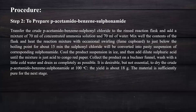Step 2: Transfer the crude product to a reaction flask. Add 70 mL concentrated ammonia solution and 70 mL water, mix, and heat the reaction mixture with occasional swirling in the fume cupboard, just below the boiling point for 50 minutes, until the sulfonyl chloride converts to a paste suspension of the corresponding sulfonamide. Cool the suspension in ice, then add dilute sulfuric acid until the acid color appears on Congo red indicator. Collect the product on a Buchner funnel, wash with cold water, and dry at 100°C. Approximately 80 grams of product will be received, sufficient for the next step.